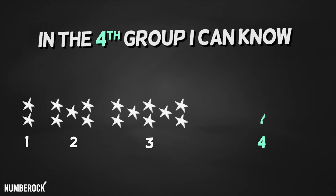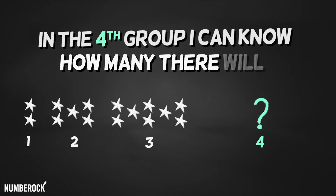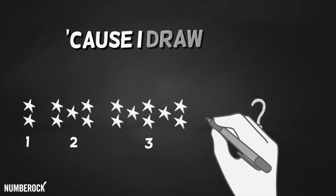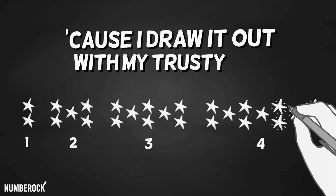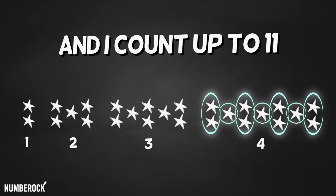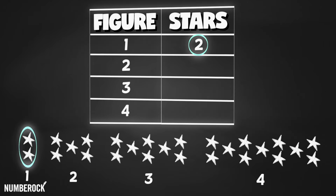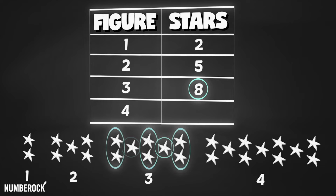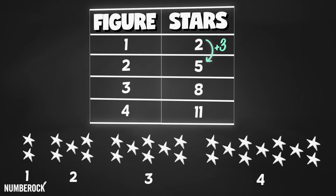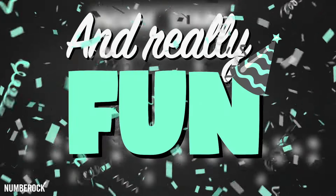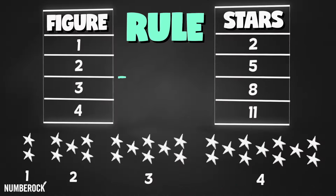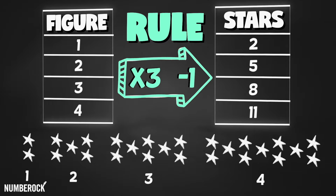Two stars, five stars, then eight stars I see. In the fourth group I can know how many there will be. Cause I draw it out with my trusty pen and I count up to eleven. Or else I can make a chart so that I can see: the pattern starts with two and keeps adding three. And I discover something challenging and really fun — this pattern has a rule: times three minus one.